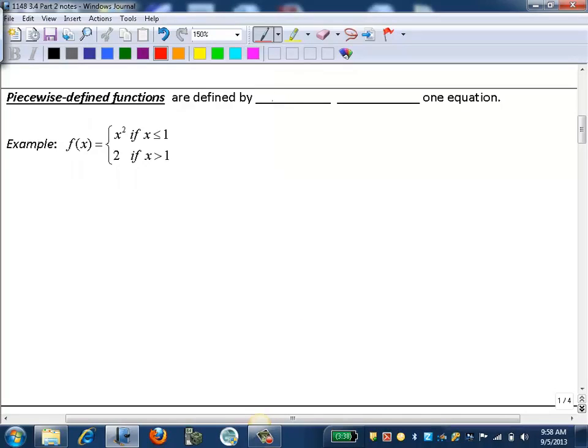Piecewise defined functions are defined by more than one equation. So here is an example of the function f of x, and we can see that there's two different parts to this equation.